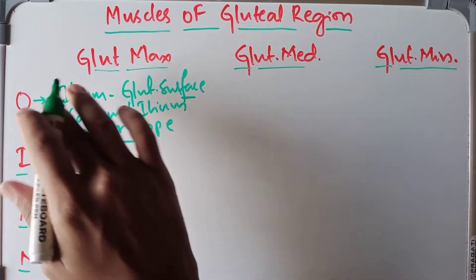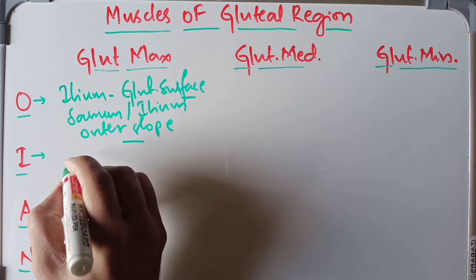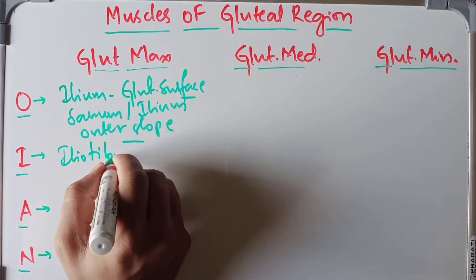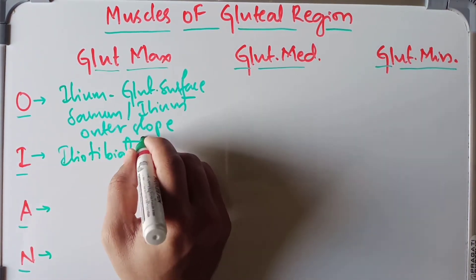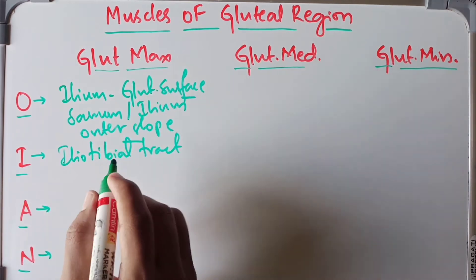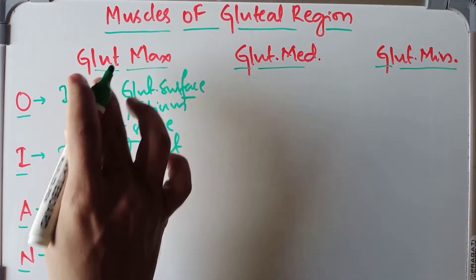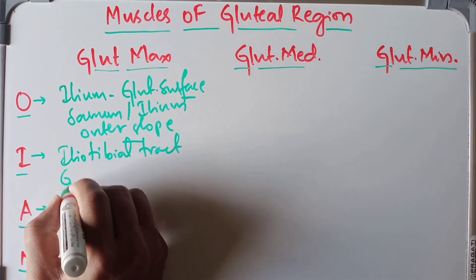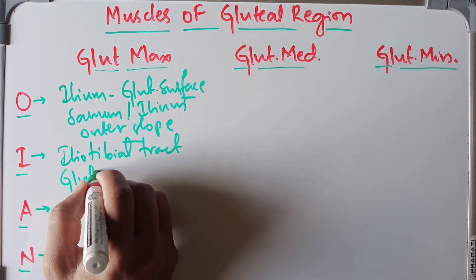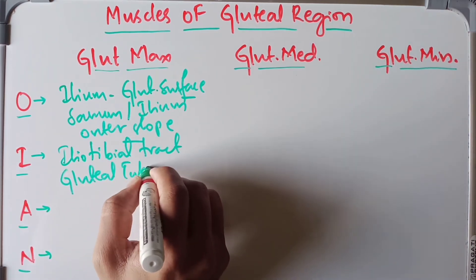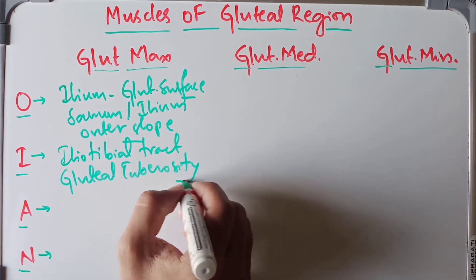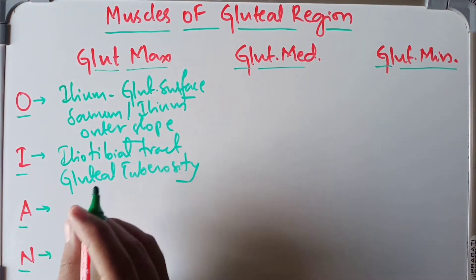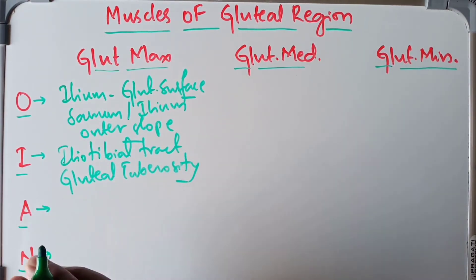Regarding insertion: three-fourths of the gluteus maximus inserts into the iliotibial tract, and one-fourth inserts into the gluteal tuberosity. For its action, it is the chief extensor of the hip joint and assists in getting up from a sitting position.